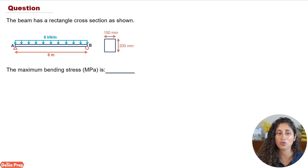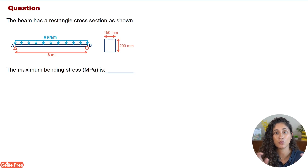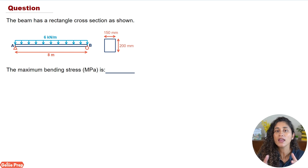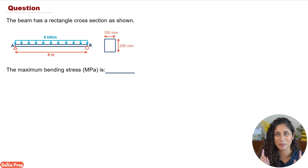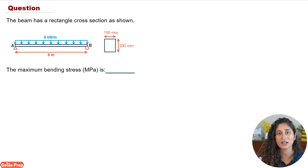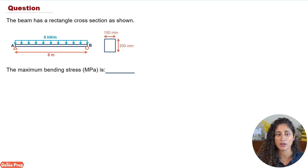Now let's go over the problem. We are given a simply supported beam with a uniform distributed load. We are also given the cross section of the beam, and we want to determine the maximum bending stress in megapascals. The first thing you need to do is go to the reference manual and try to find the maximum bending stress equation.